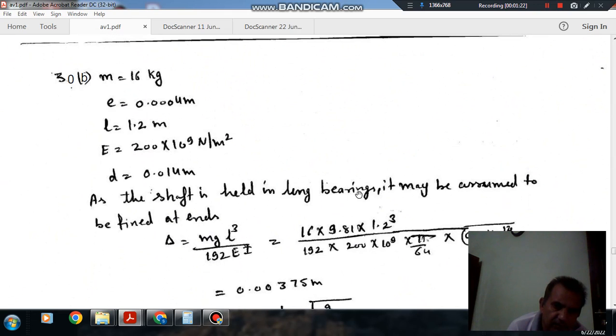Now as the shaft is held in long bearing, the long bearing can be assumed as fixed end. And for the fixed end, the deflection when the point load is placed at the midpoint of the bearing—the deflection is given by WL³ / 192EI.